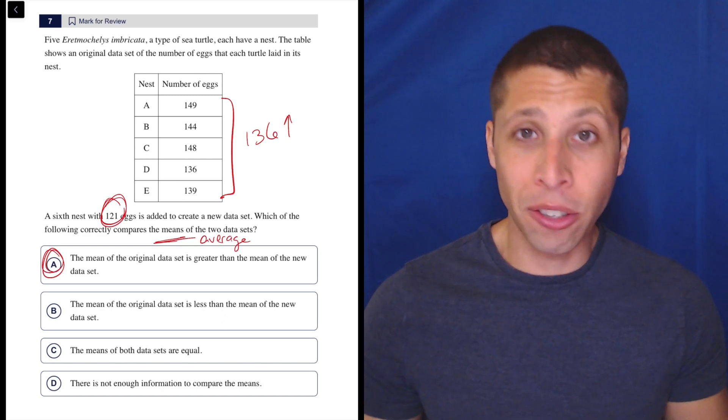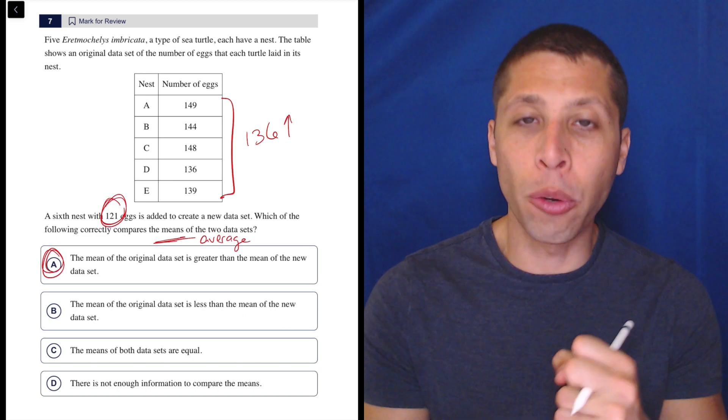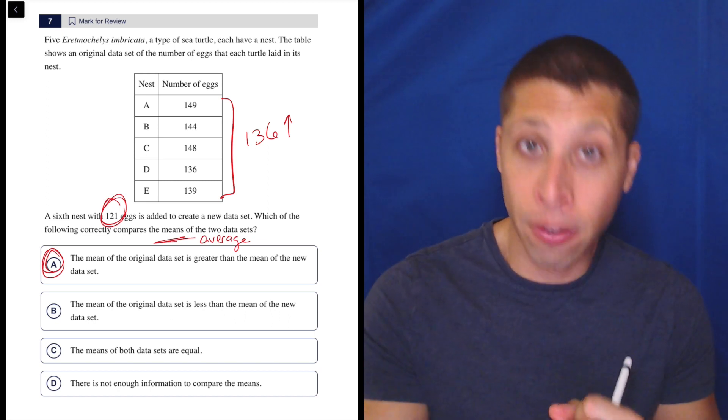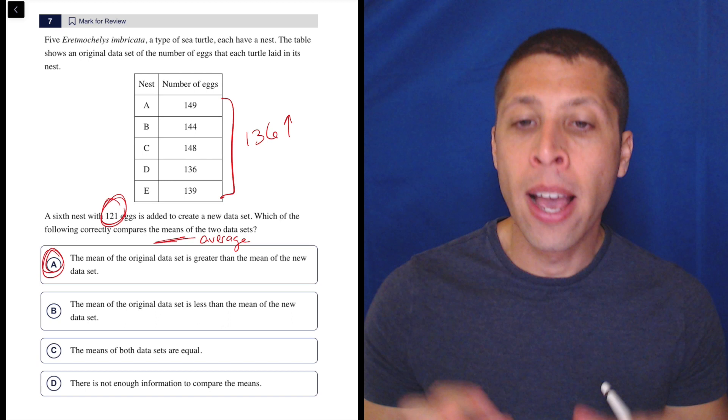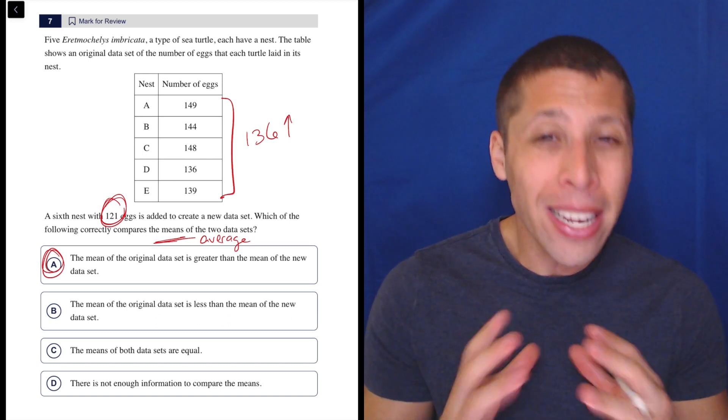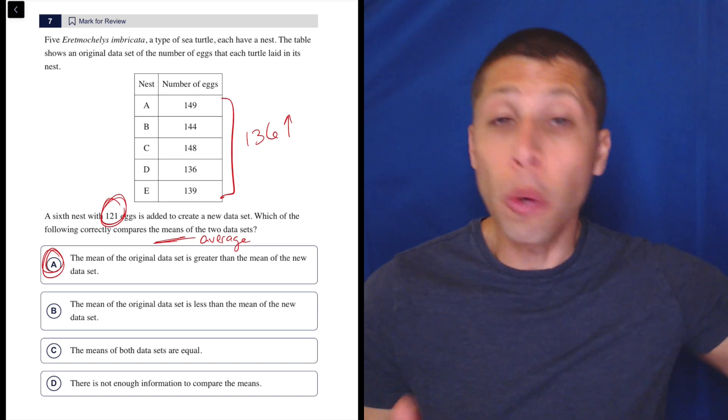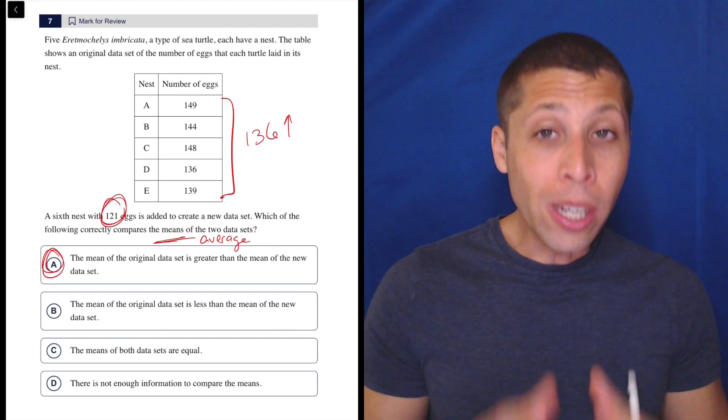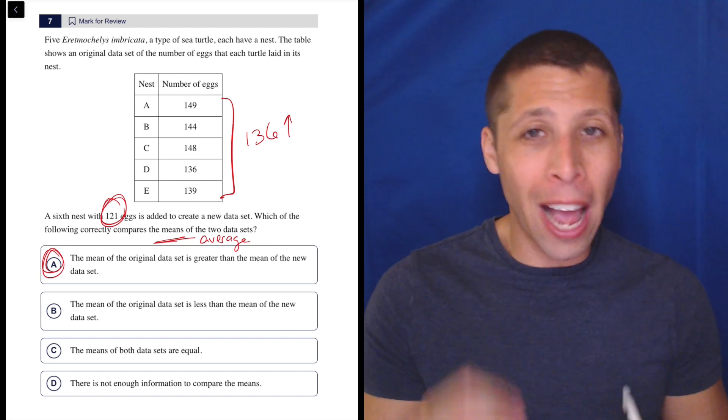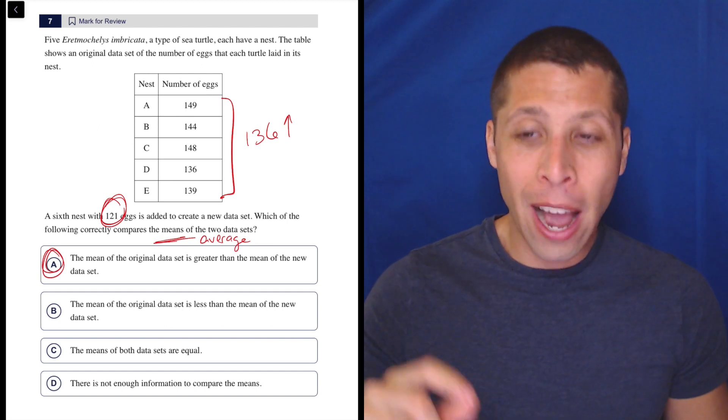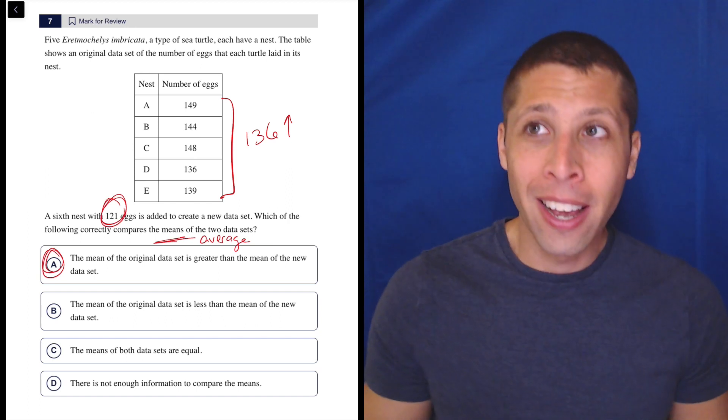So there are lots of questions in the SAT where they're asking you to compare data sets like this, add in a value, take a value away, change the values in some way. Those are questions where in many cases you can still do it the long way, but you really want to at least start out trying to think about a shortcut. Now, if you're unsure if that shortcut is correct, then do both ways.